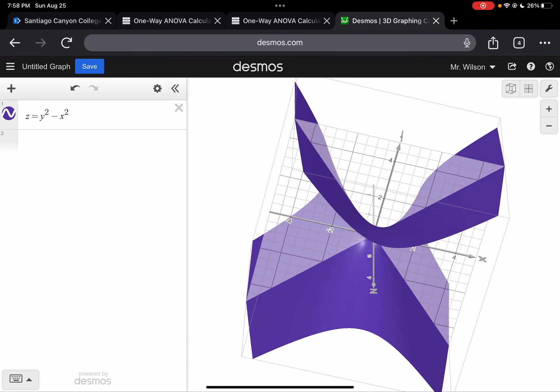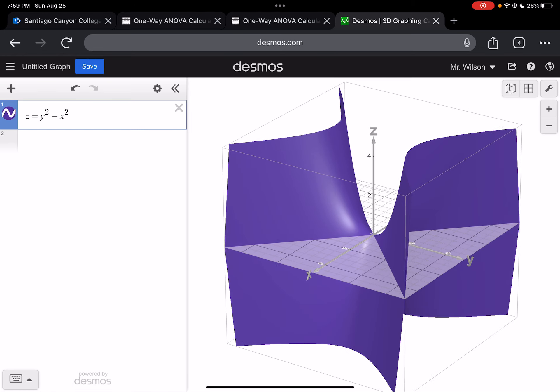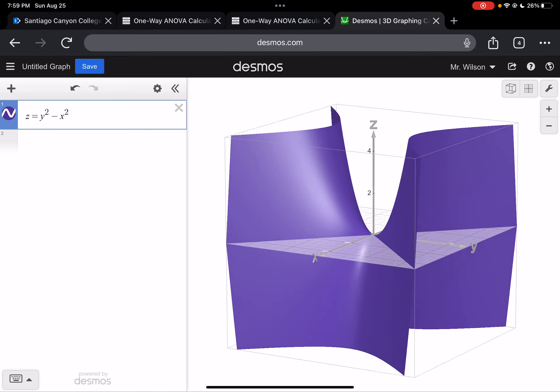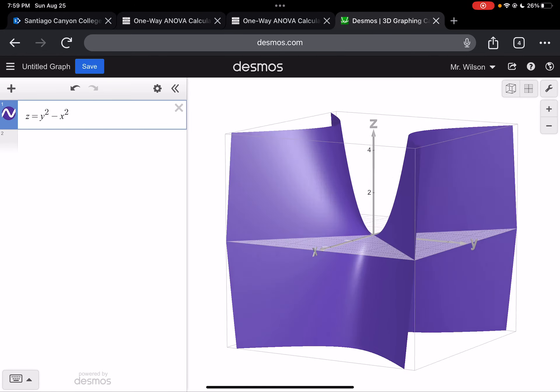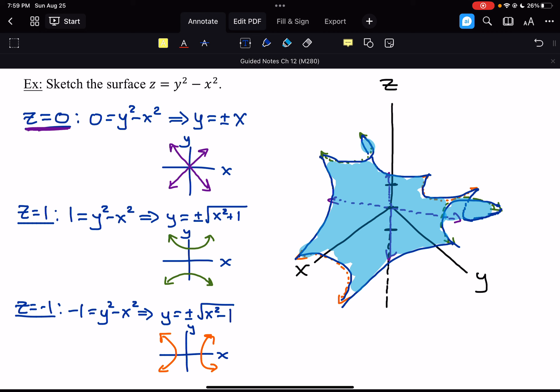So, that's what this surface is supposed to look like. And, again, I'm not going to ask you to draw these things in 3D, just to be able to sketch the traces, be able to at least have some understanding of vaguely what these surfaces look like, because we're going to be encountering them as we go throughout the semester.